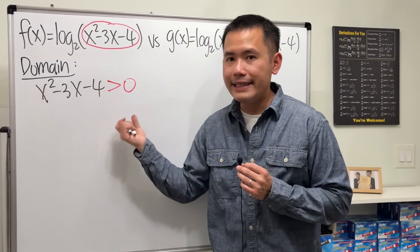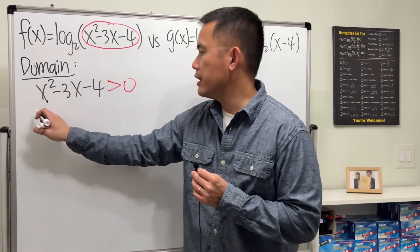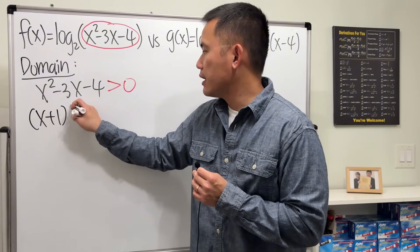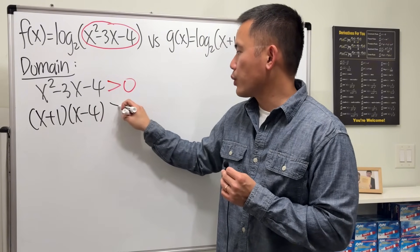Here we have a quadratic inequality, we still have to factor it. We get x plus 1 times x minus 4 is greater than zero.